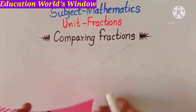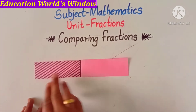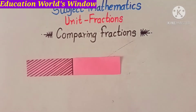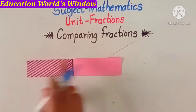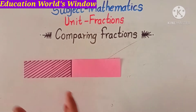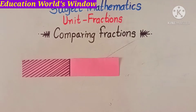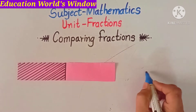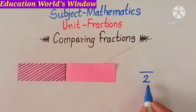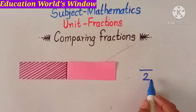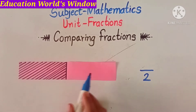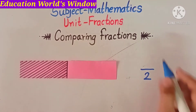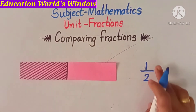This is a strip of paper. I divide this strip into two parts and one part is colored and one part is not colored. If we write the colored part in the form of a fraction, the colored part is 1 upon 2.